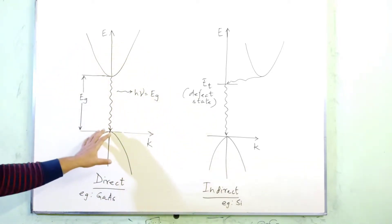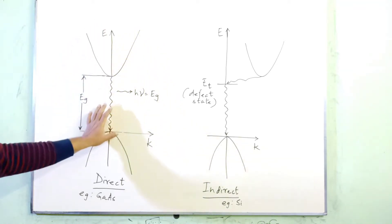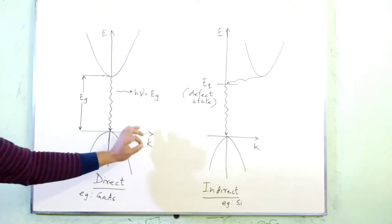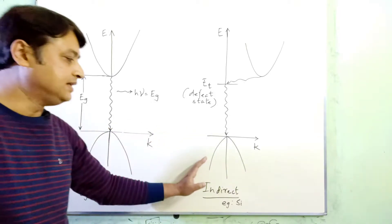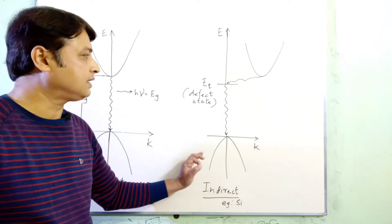This is known as the EK diagram because on the y-axis I have plotted the energy and on the x-axis I have plotted the momentum, that is K. In this part of the figure, I have shown you an indirect bandgap semiconductor.